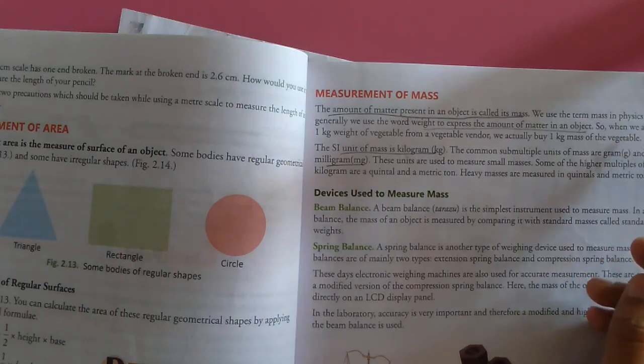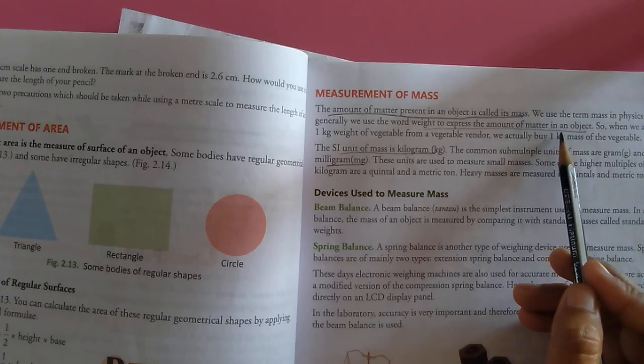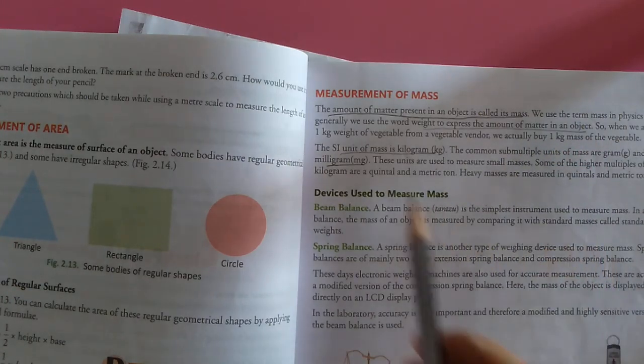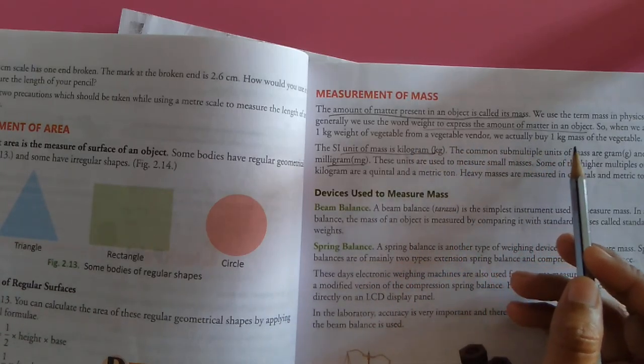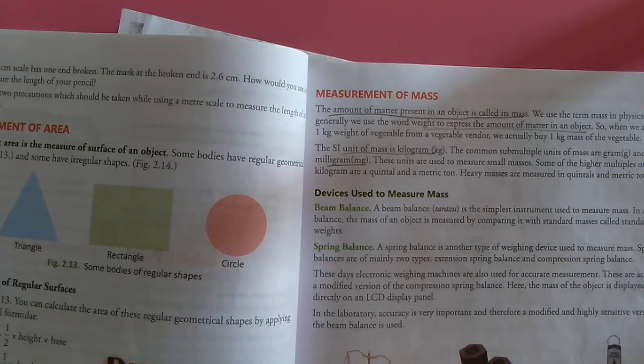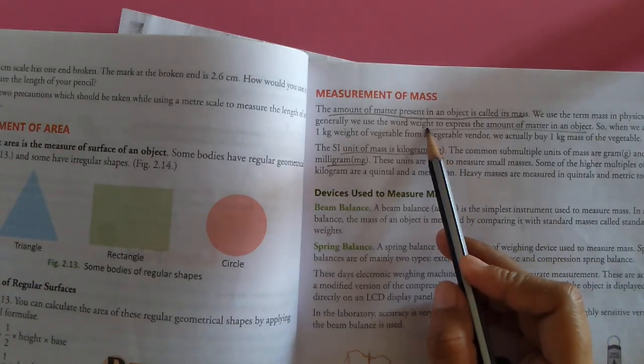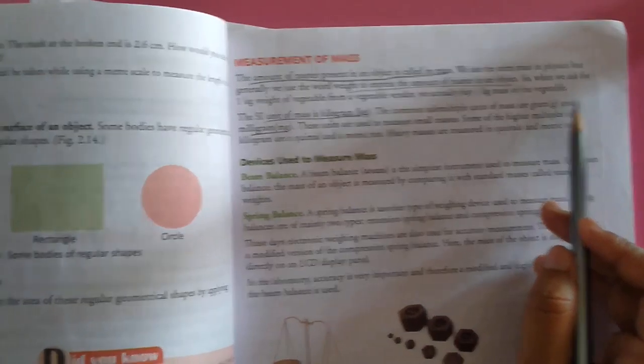We use the term mass in physics, but generally we use the word weight to express the amount of matter in an object. When we ask 1 kg weight of vegetables from a vegetable vendor, we actually buy 1 kg mass of the vegetable. In physics the specific word is mass, but in normal language we use weight.